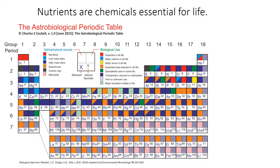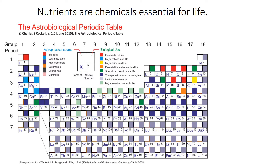This is a periodic table, basically for astrobiologists to have a look at. It shows, in the top left-hand corner of each element symbol — you can see the red for hydrogen here — basically where that element is produced. That's not really relevant for us, so I'll cover those over. Over on the other side, we can see what those elements are used for in life.